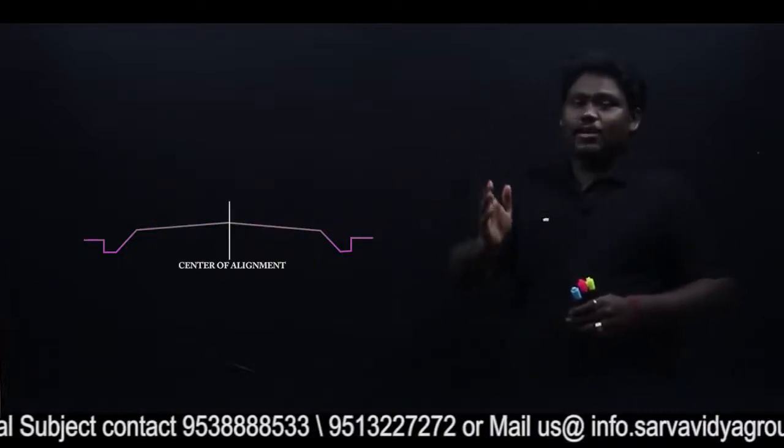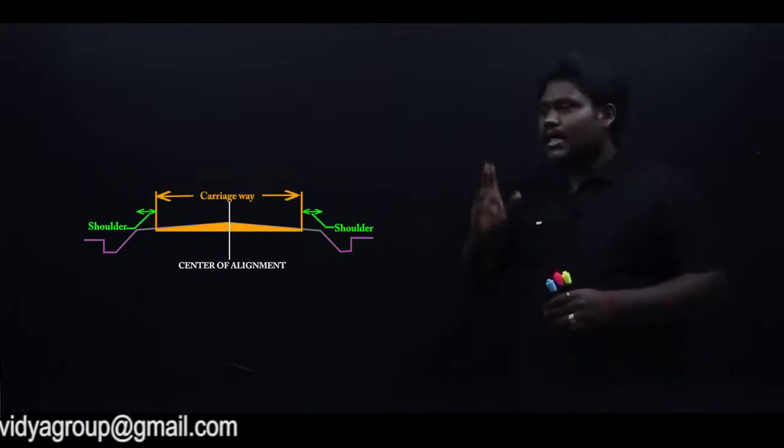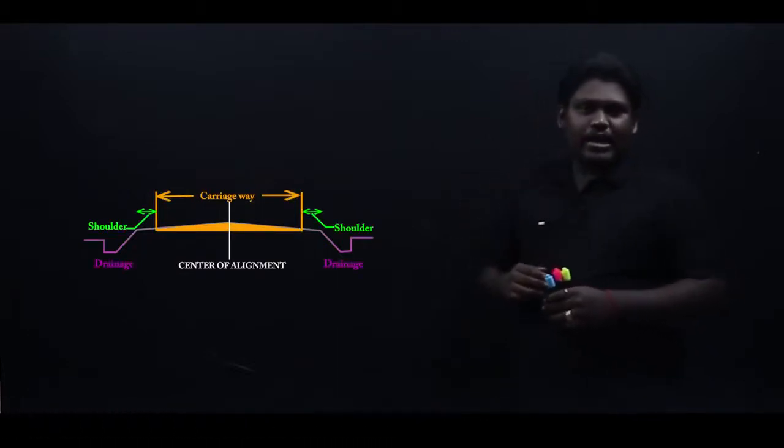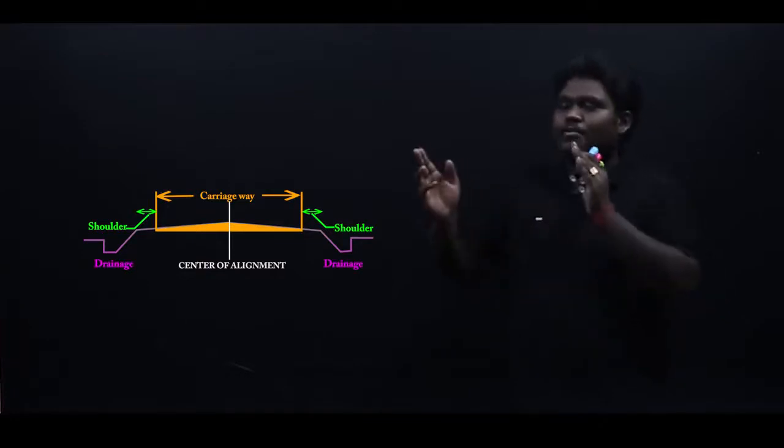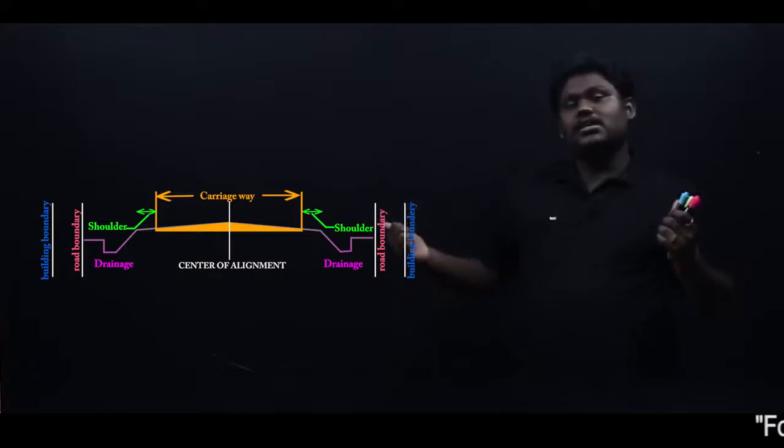...if we start with, we have the carriageway, then the shoulders, then the drainage, then the boundary lines and building lines. The last two lines are called control lines.